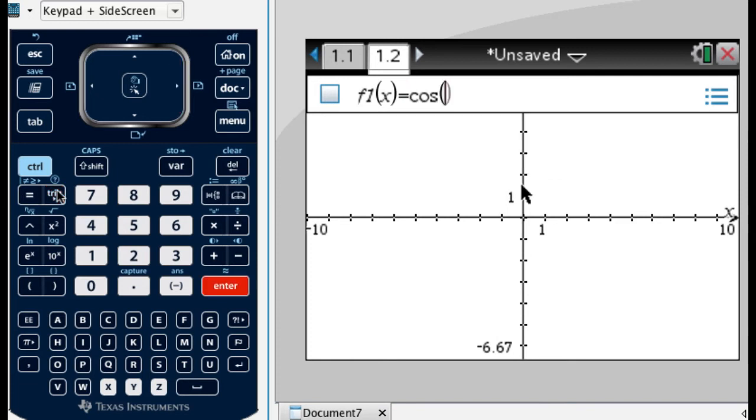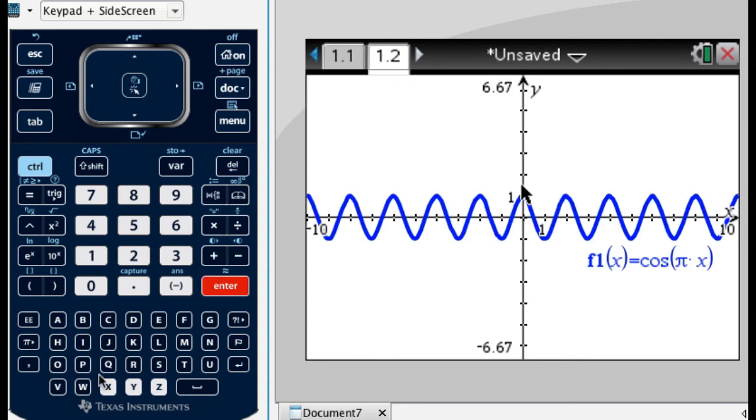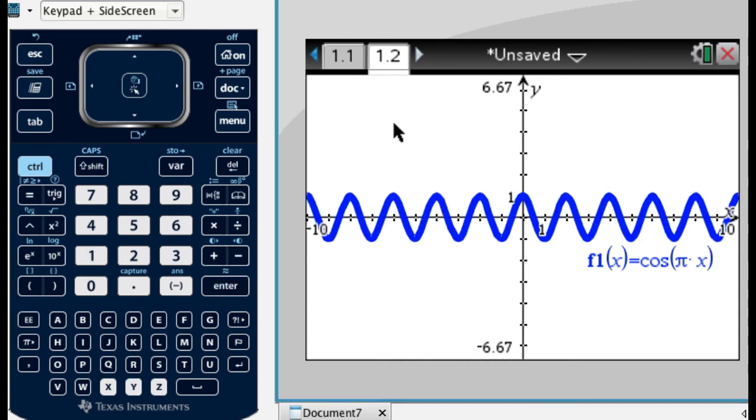So what I want to do is graph cosine of pi times x. So trig key, cosine, pi key, pi. It's optional, but I'm going to put multiplication, and then x. Press enter, and see this graph. And maybe you've never seen this graph before. It's kind of neat. So it looks like this.